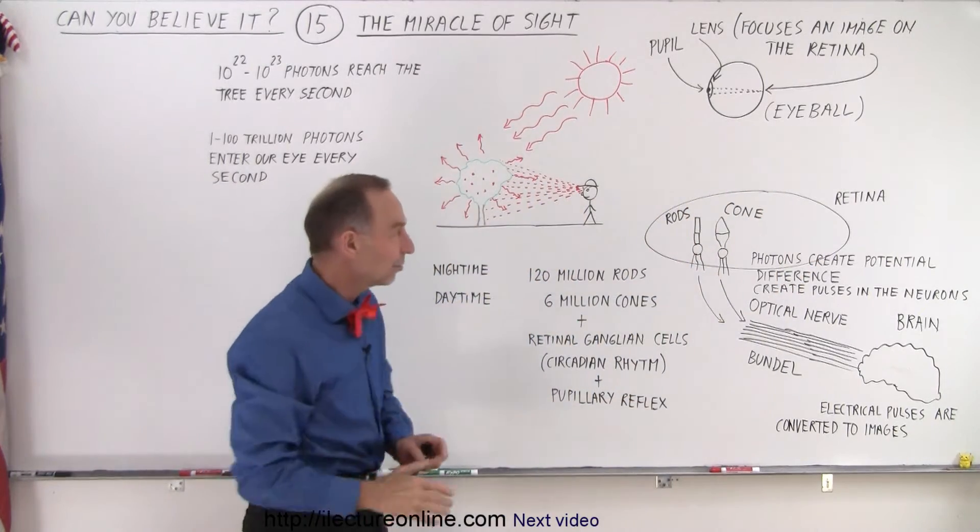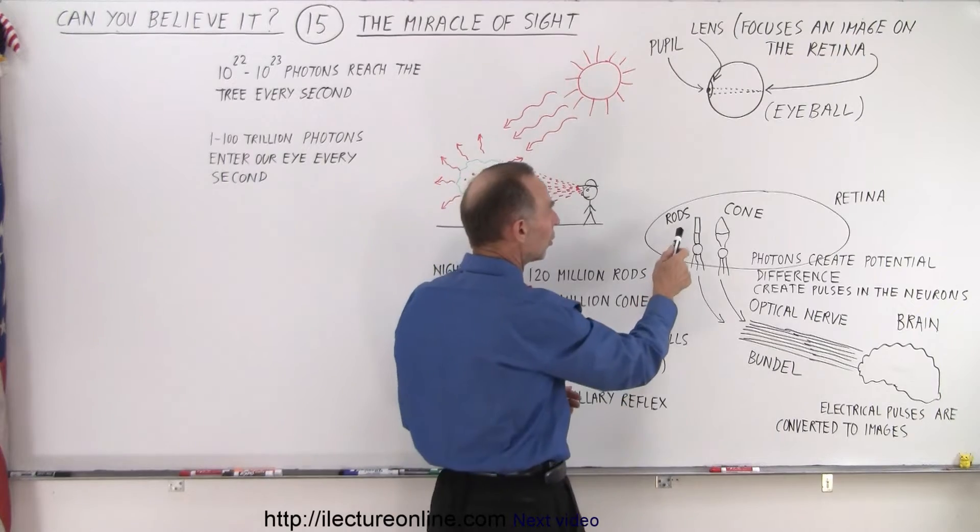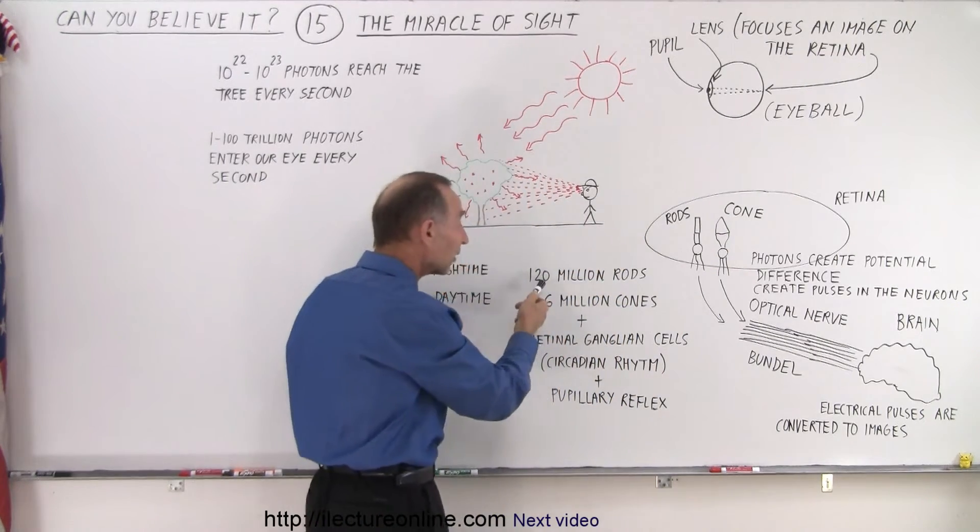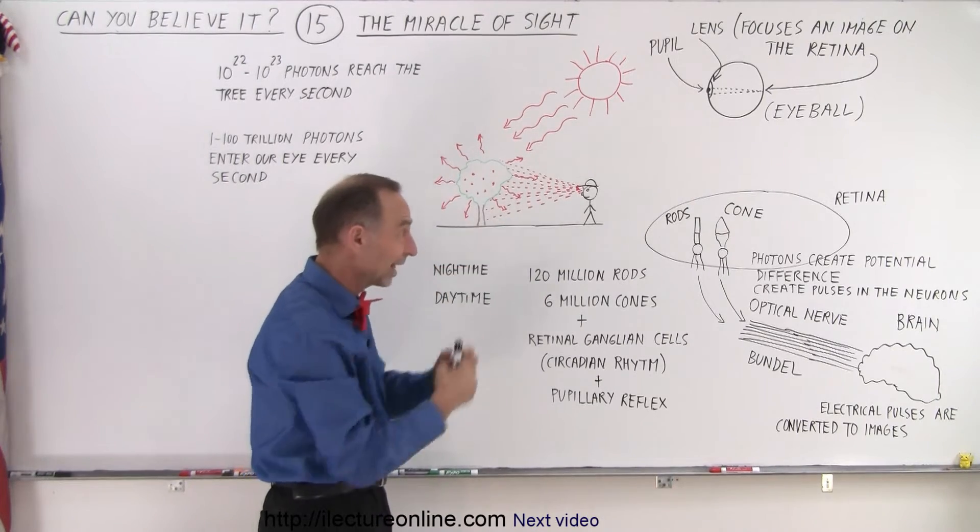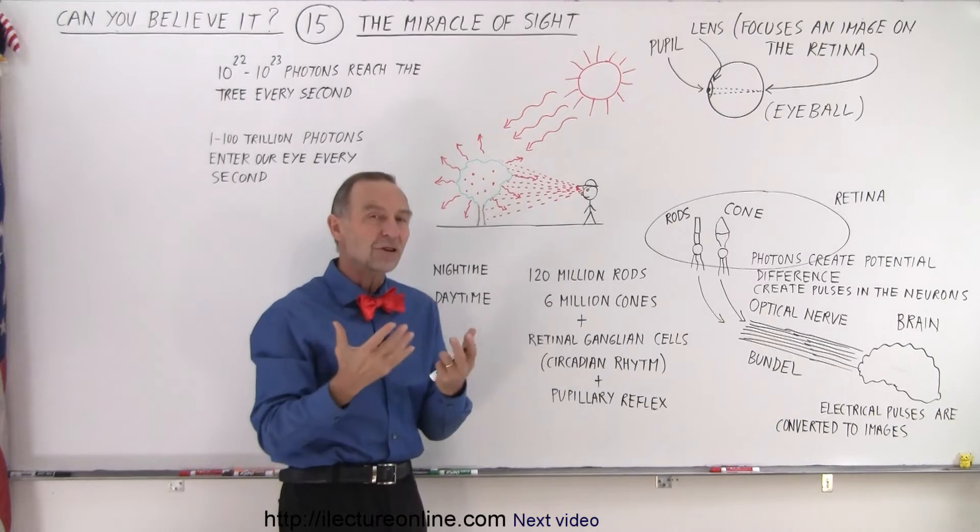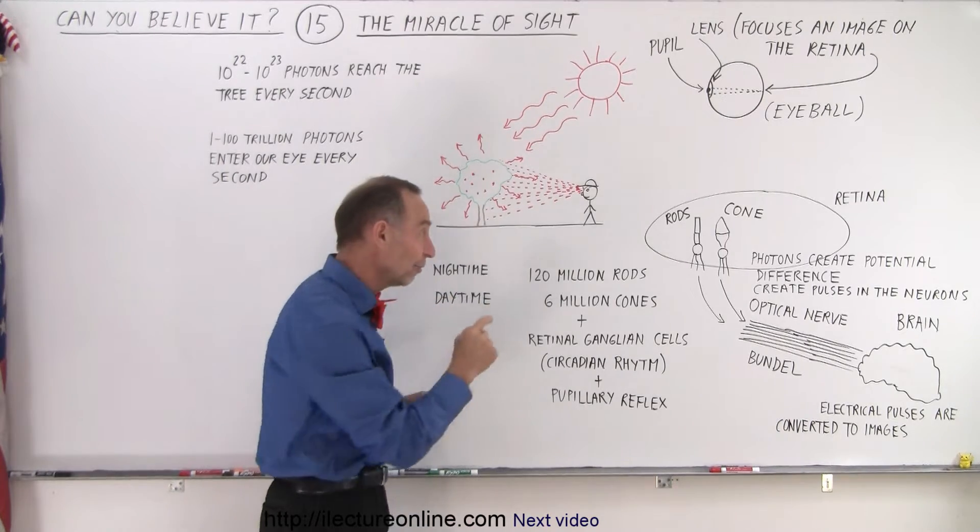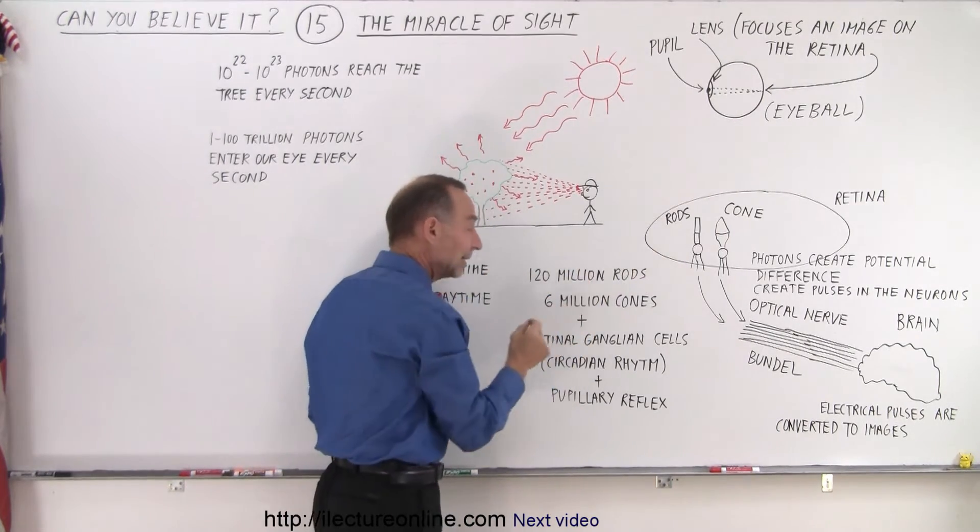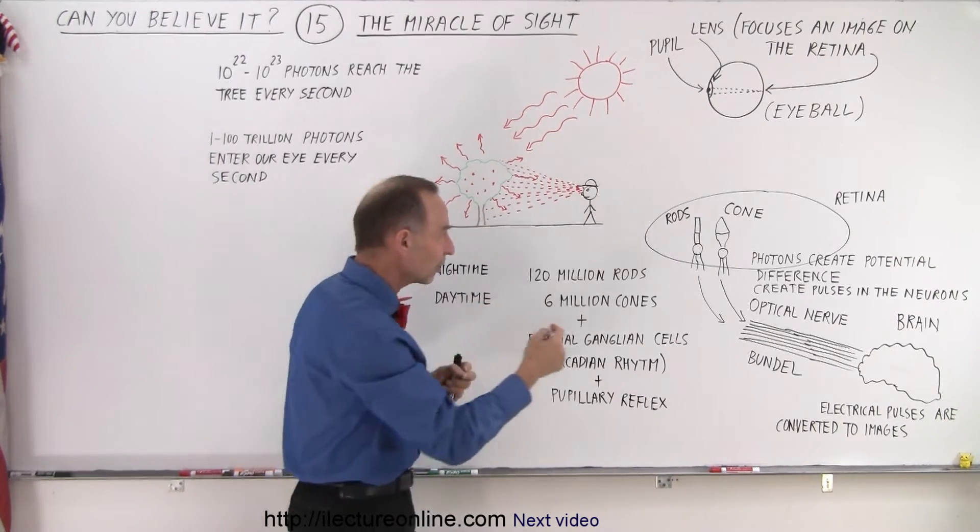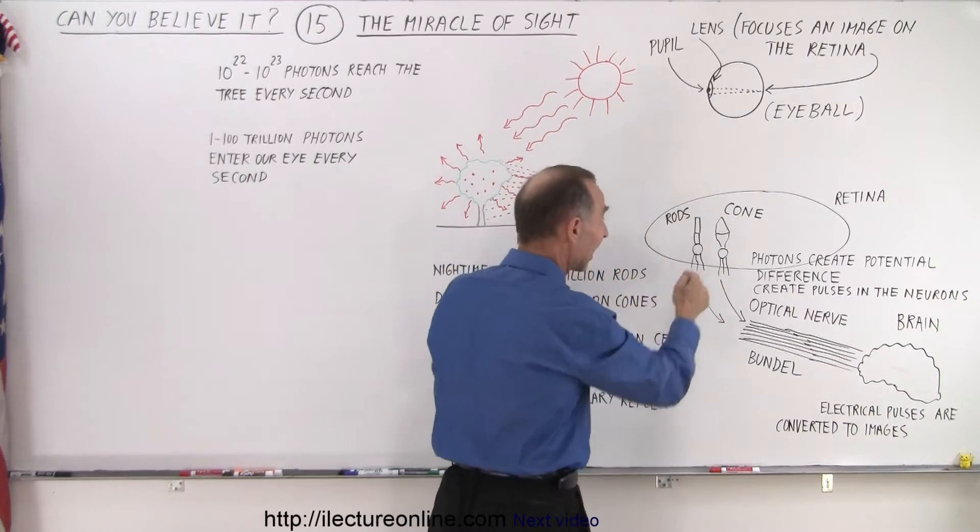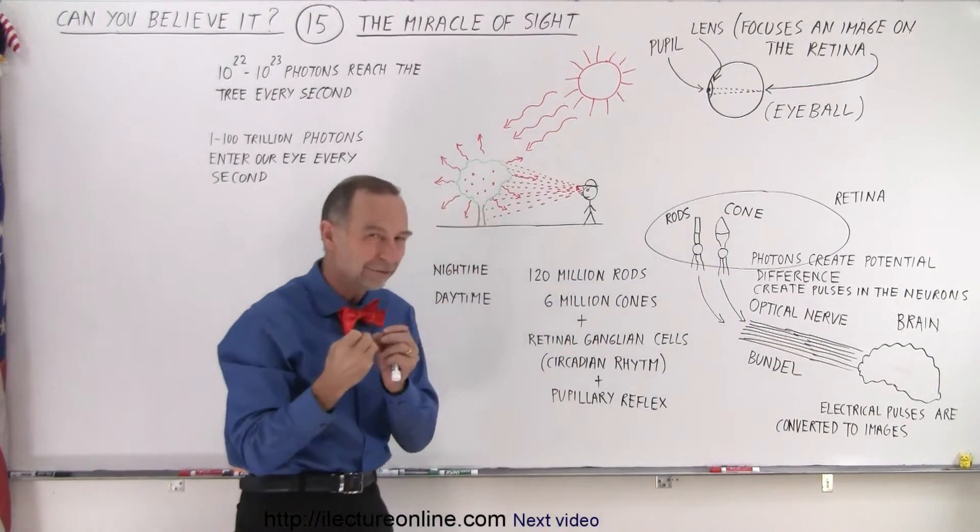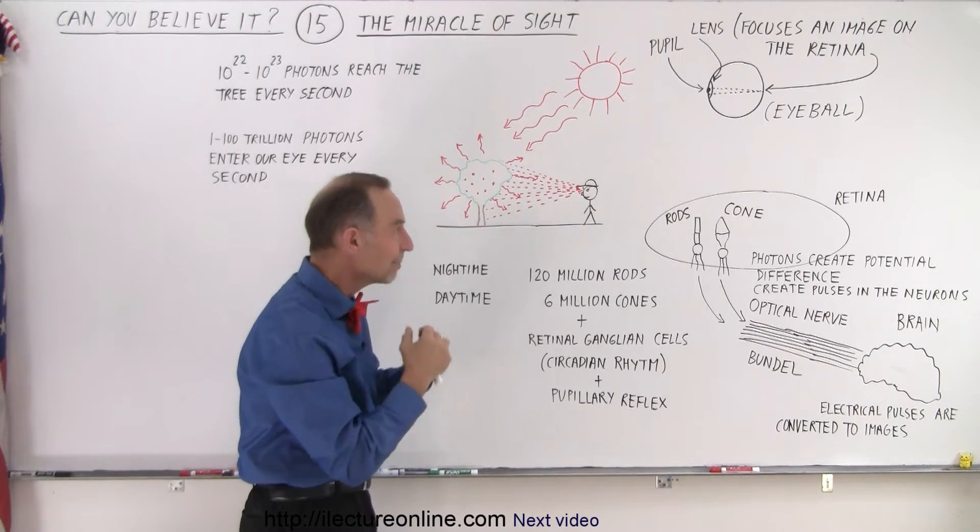There's about three different kinds of light-sensitive cells. The two major ones are what we call the rods and the cones. The rods—there's about 120 million of these rods—are predominantly used for nighttime vision or for very dim vision. They're very sensitive. They can sense a single photon. If a single photon hits a rod, it can actually sense that and send the signal to the brain from that single photon.